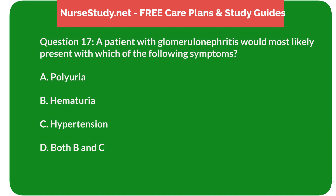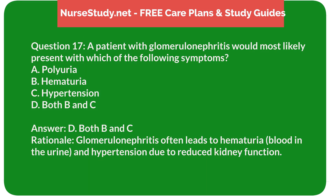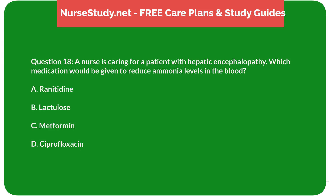Question 17: A patient with glomerulonephritis would most likely present with which of the following symptoms? A) Polyuria, B) Hematuria, C) Hypertension, D) Both B and C. Answer: D, Both B and C. Rationale: Glomerulonephritis often leads to hematuria (blood in the urine) and hypertension due to reduced kidney function.